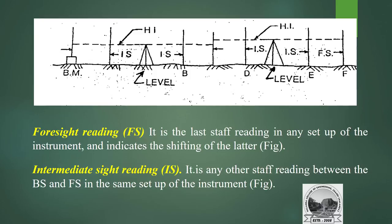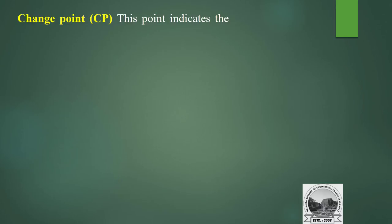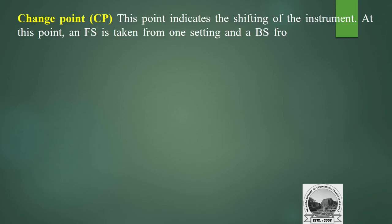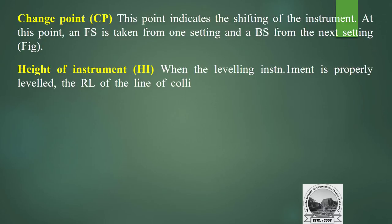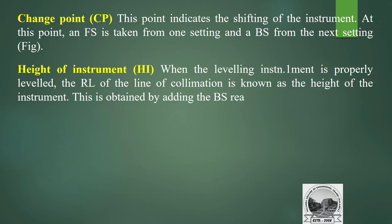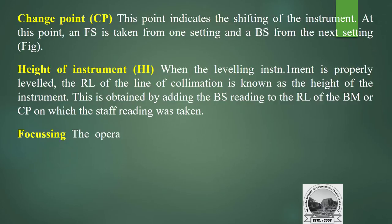From intermediate sight reading, we take the difference between the backsight and foresight at the same setup. Change point: the point indicating the shifting of the instrument — at this point, a foresight is taken from one setting and a backsight from the next setting. Height of instrument: when the leveling instrument is properly leveled, the reduced level of the line of collimation is known as the height of the instrument. It is obtained by adding the backsight reading to the reduced level of the benchmark or change point.